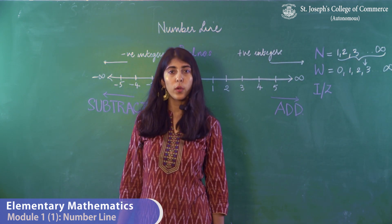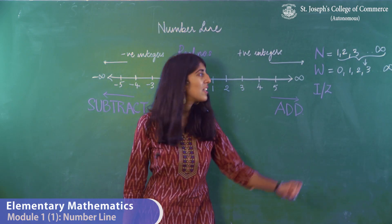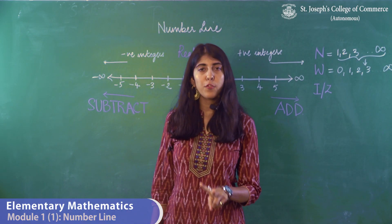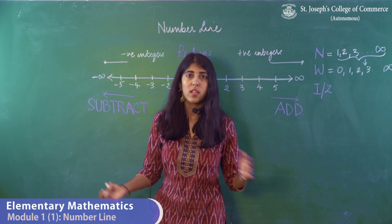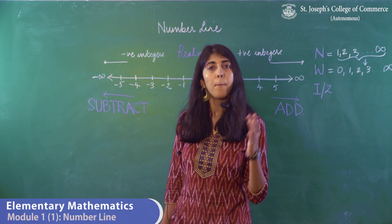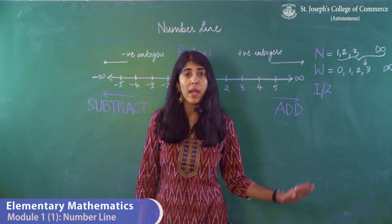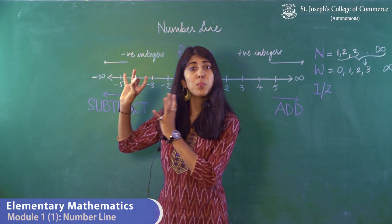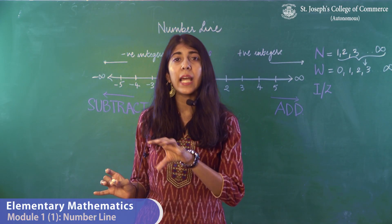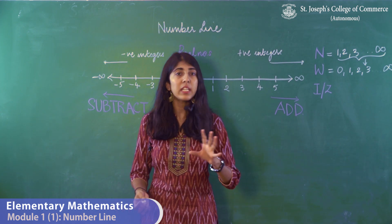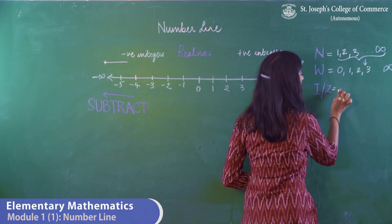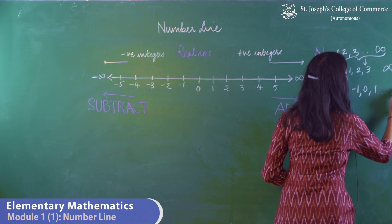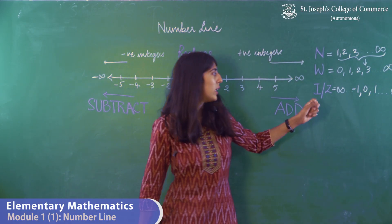The third type of number we're going to look at are integers. They are represented by the letter I or the letter Z. Integers are of two types: negative integers and positive integers. Negative integers are minus 1, minus 2, minus 3, and they move on to negative infinity. 0 is in the middle and it's neither positive nor negative. Integers include 0, 1, and they move on to positive infinity.